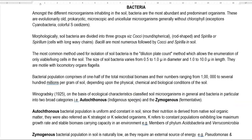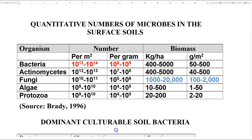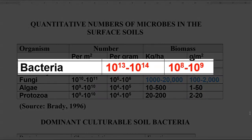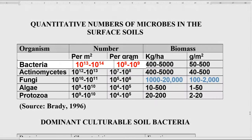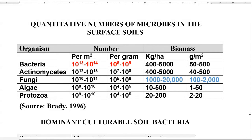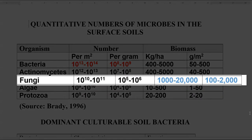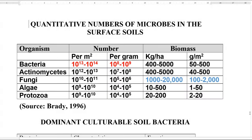The first organism we will look at is bacteria. This is a table showing the distribution of various organisms, their population numbers in the soil and their respective biomass. Bacteria is the one which is numerically dominant in the soil environment, whereas in terms of biomass, it is fungi that dominate the soil system. On this basis, we are first going to look at some salient features about soil bacteria.